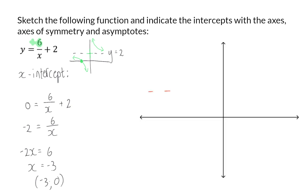When drawing the sketch, I once again start with my asymptotes at y is equal to 2, and at x is equal to 0, or the y-axis. Next, the hyperbola lies in the first quadrant and in the third quadrant, and my x-intercept is at (-3, 0).